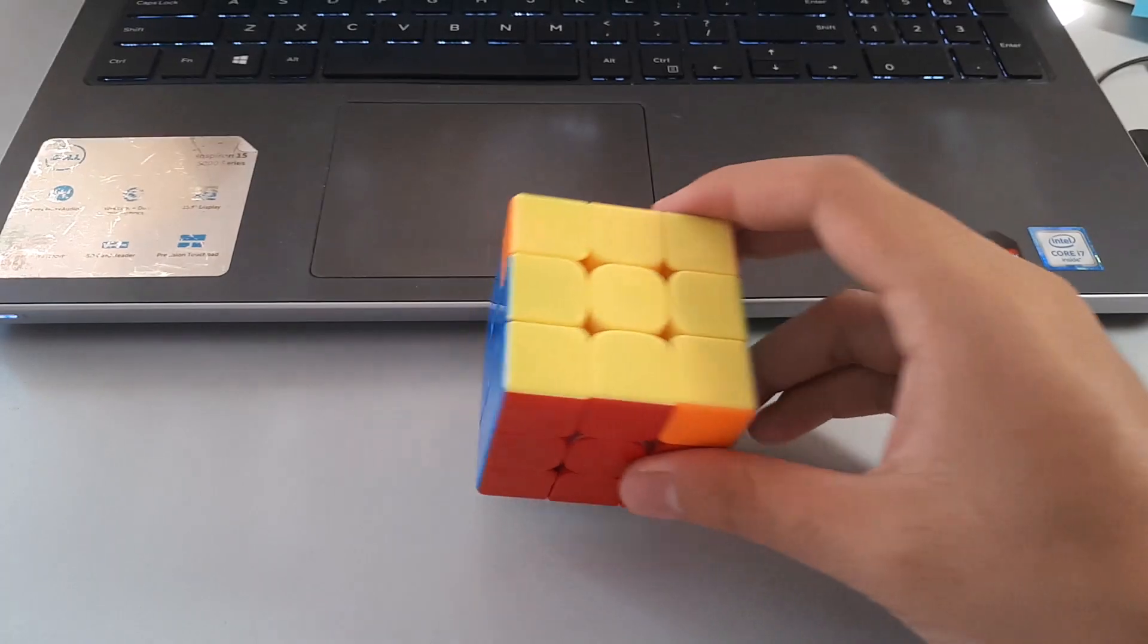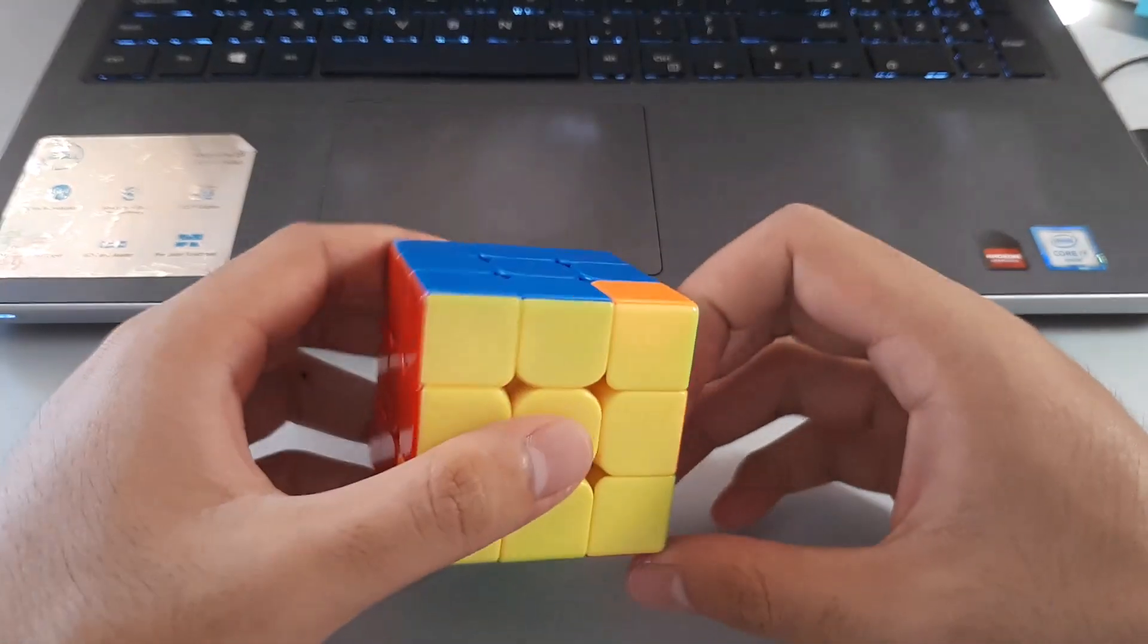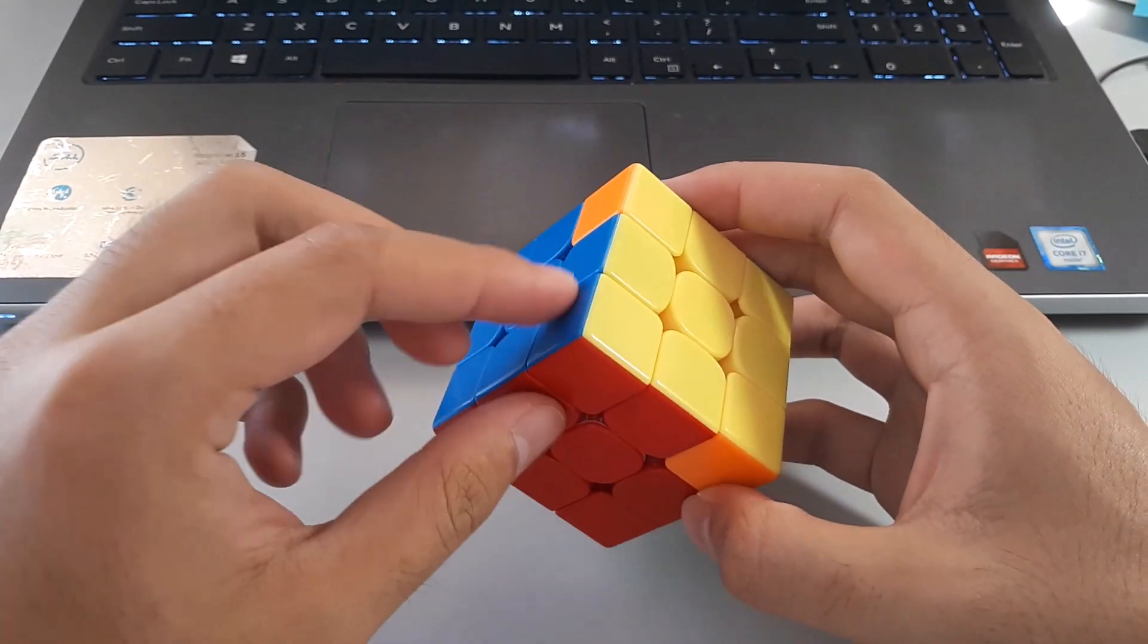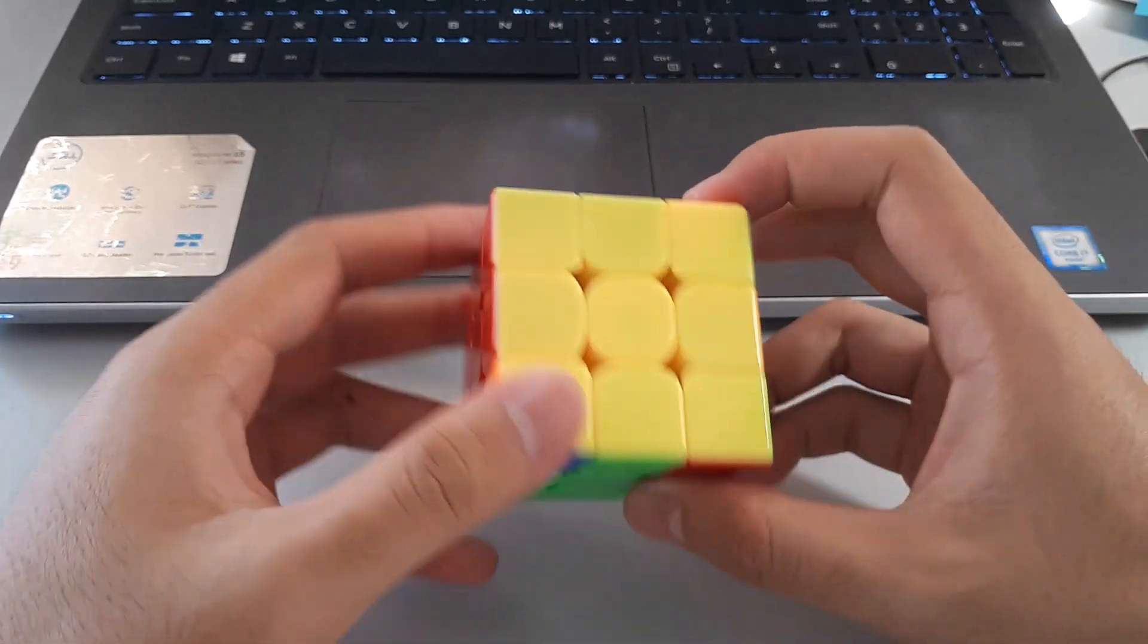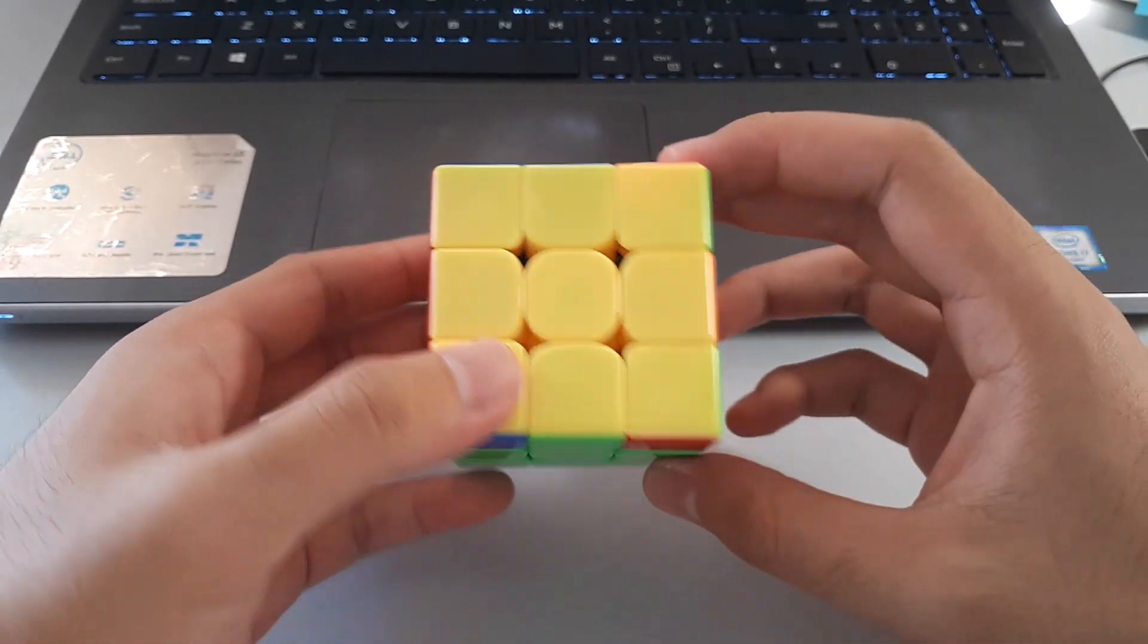Also for the AA perm, there is another algorithm you could use, which involves holding the 2x2 block at the back left and doing this algorithm.